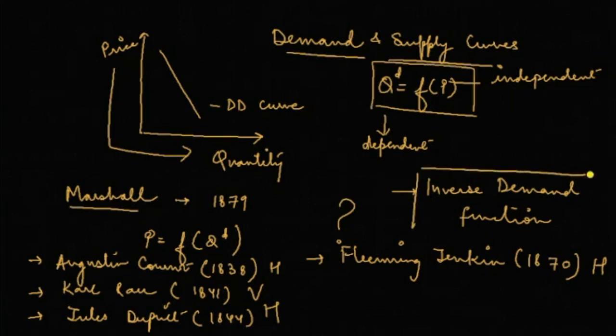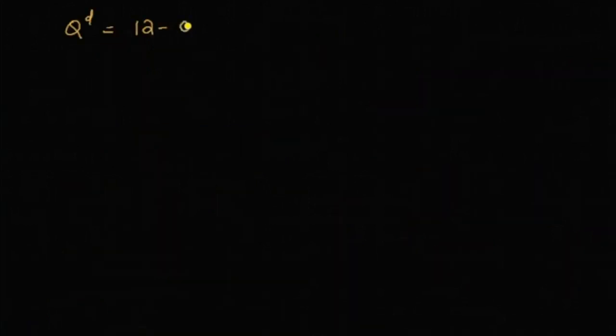Let's try to understand this through a functional example. Let's say quantity demanded is equal to 12 minus 0.5P, where P refers to prices. And in this particular functional form, we assume the usual demand function where quantity is the dependent variable and prices are the independent variable.